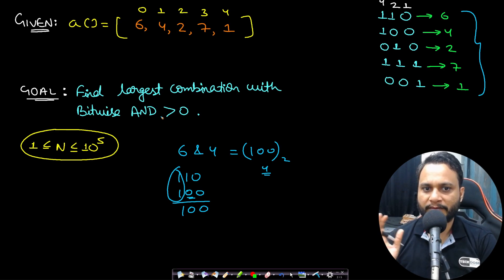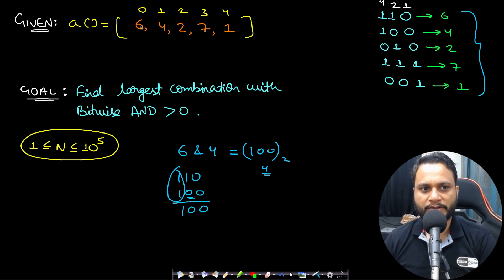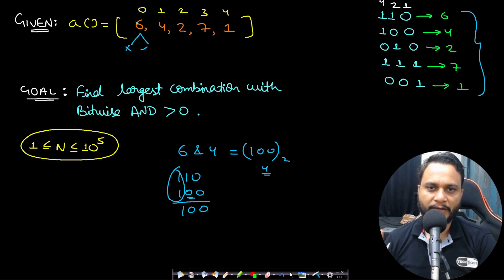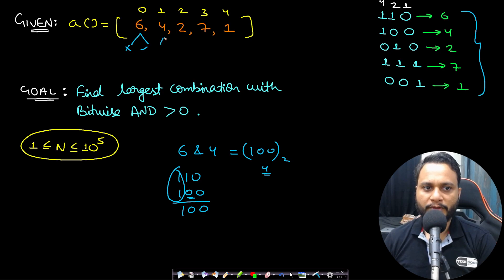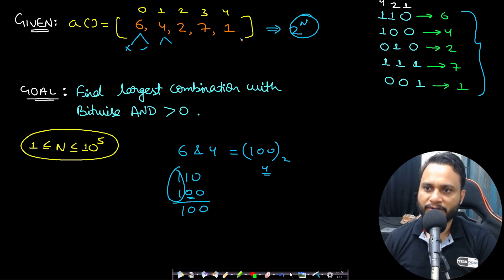If you want to do this in a brute force way, you can either select or not select each item, since each item should be used exactly one time — similar to the knapsack problem. But if you go with this approach and have n items, the total number of combinations is 2^n. To generate all possible combinations and test which is the largest with bitwise AND greater than zero would require O(2^n) time complexity.